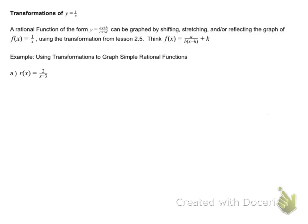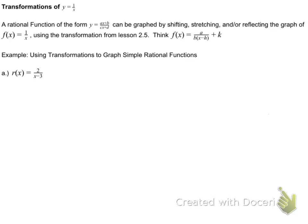So why did I show you Y equals 1 over X? It's because, yes, we can use our parent, family, child to graph them. So a rational function has the form of, again that's a little bit smaller. Let's see if I can make it a little bit larger for you. So it's a rational function in the form of AX plus B over CX plus D. It says it can be graphed by shifting, stretching, or reflecting the graph of f of x equals 1 over x, the simple rational function we just had, using the transformations from 2.5.